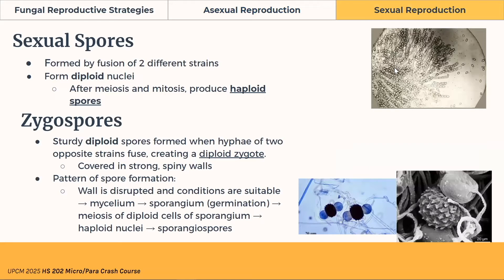Now let's talk about sexual spores. They are formed by the fusion of two different strains, forming diploid nuclei, and after meiosis and mitosis, they produce haploid spores. Zygospores are sturdy diploid spores that form when hyphae of two opposite strains fuse. Notable is their spiny appearance on both light microscopy and electron microscopy. The pattern of spore formation: the cell wall is disrupted, conditions are met, mycelium forms, then develops into a sporangium, where cells divide into haploid sporangiospores.